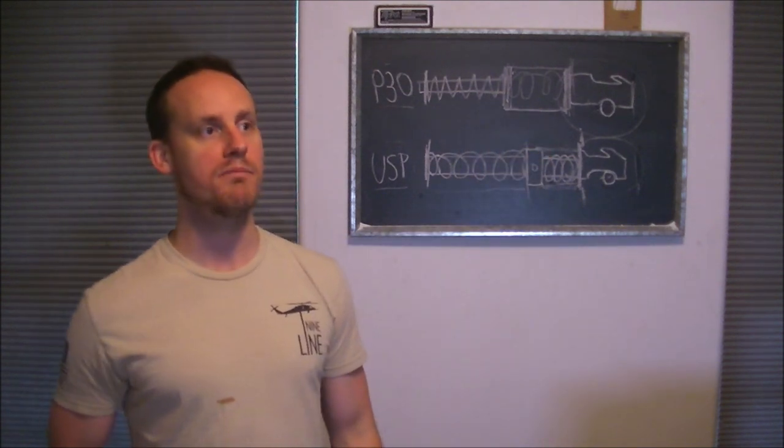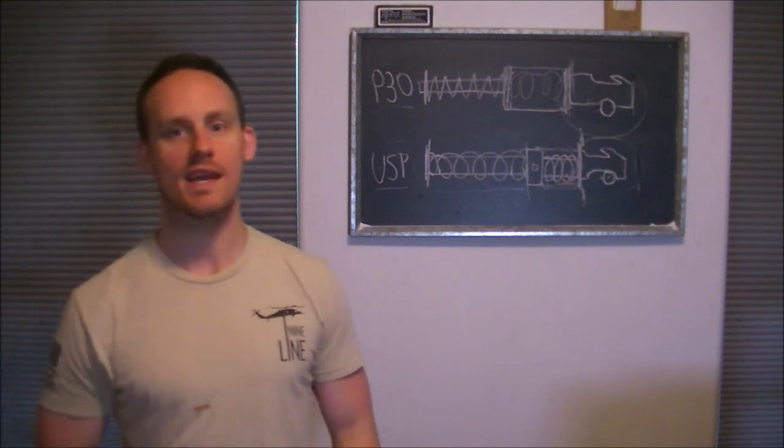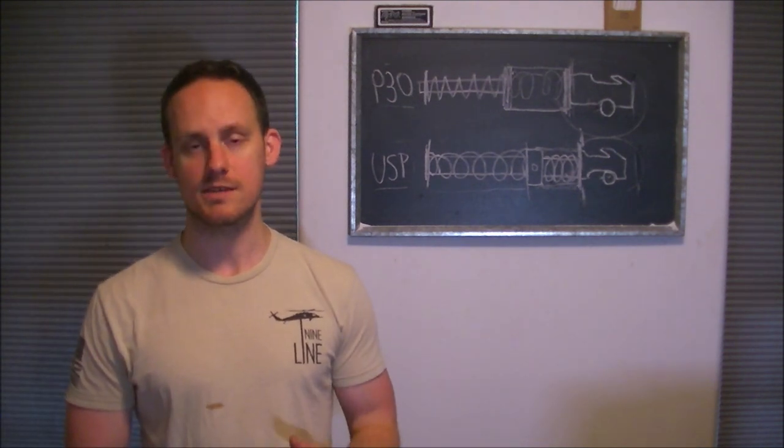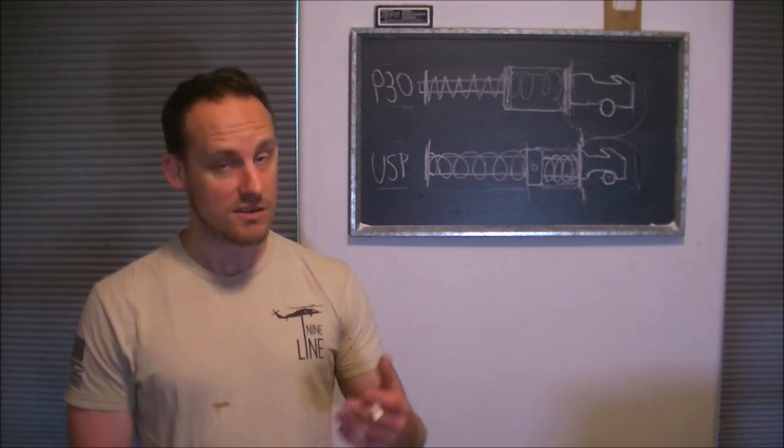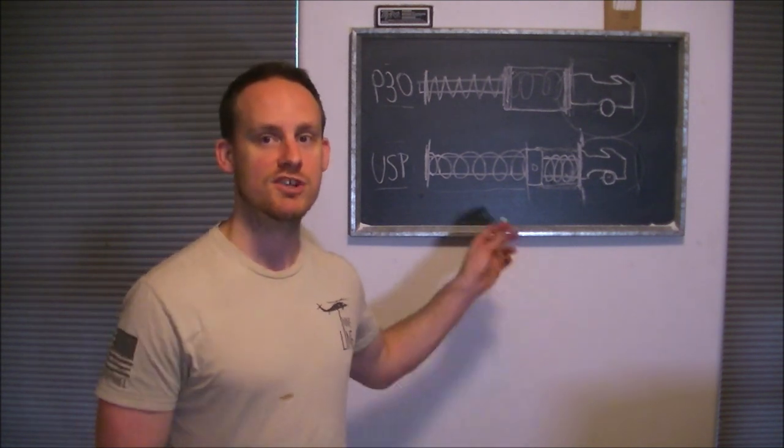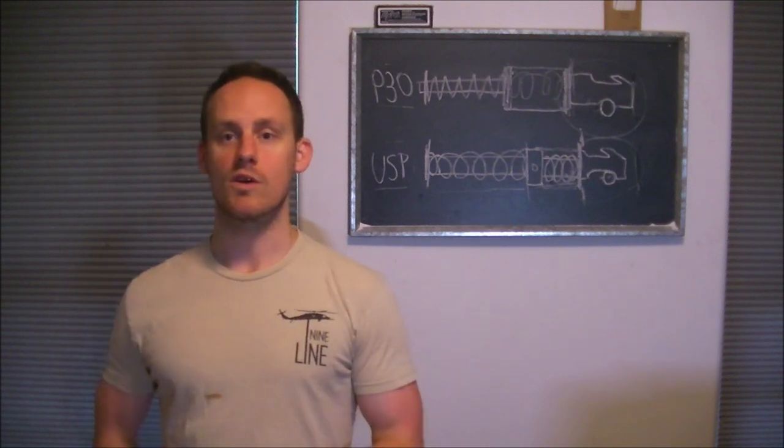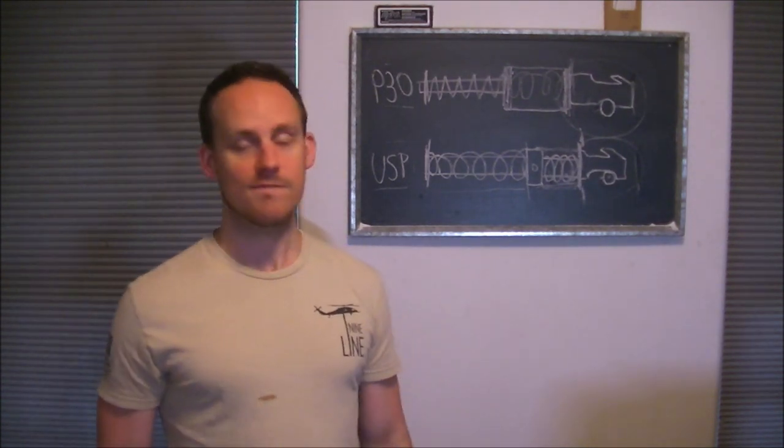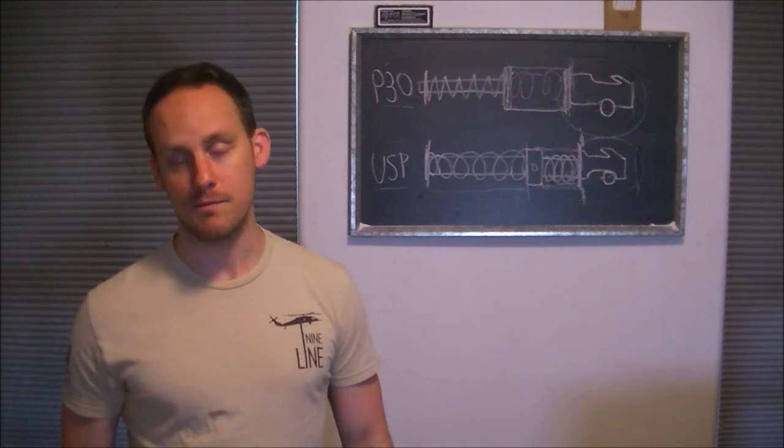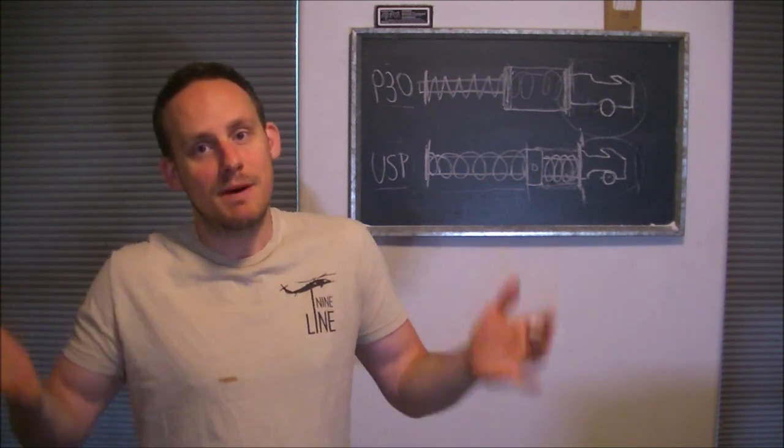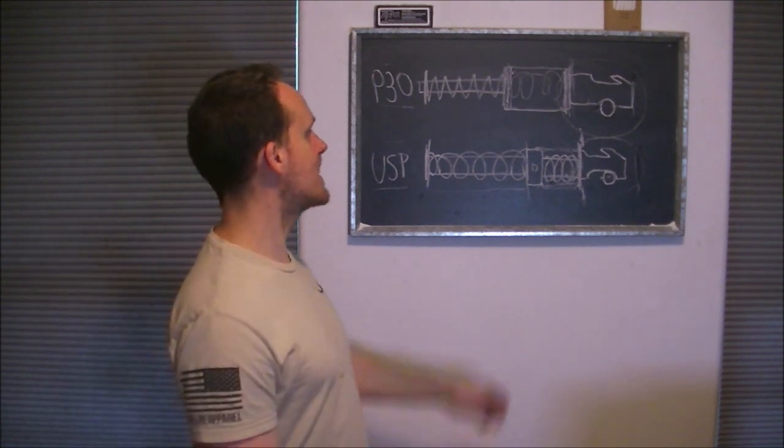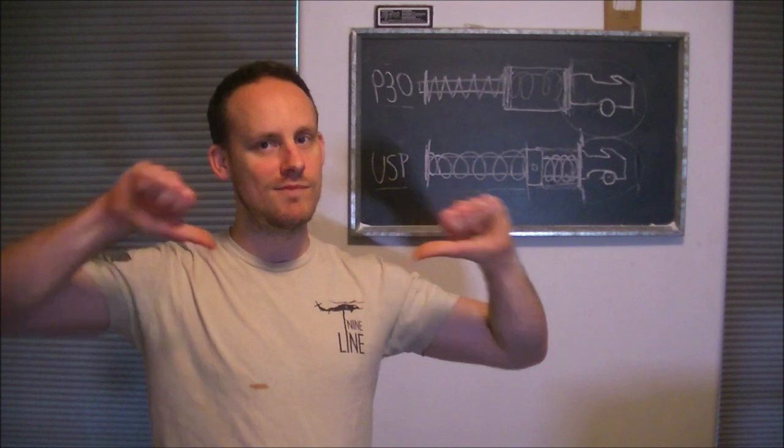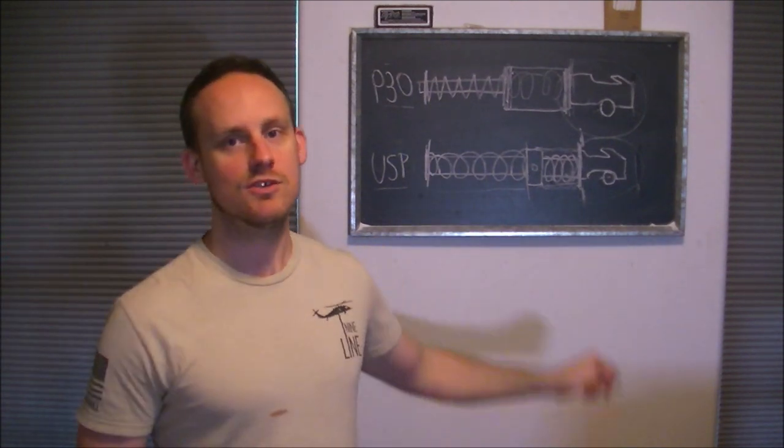You see stuff like this being applied to, like, the P30SK or the P2000SK, where they're putting in double spring systems and stuff. Still, I think those are cheapened, because I think that they could have a miniaturized version of this, or a better way of doing things. I just think that they could have done things a lot better. Anyways, that's my argument for why I think HK has cheapened their designs. No thanks, HK. I think that you could have done better.